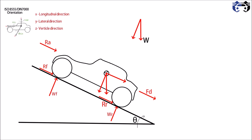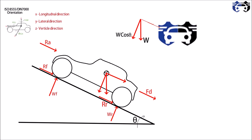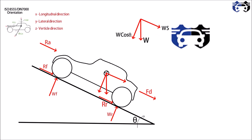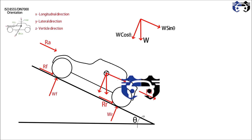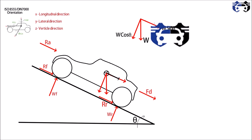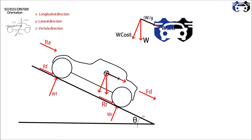The vertical force W, which is the weight of the car, has components W·cos(theta) and W·sin(theta). One more force acting is the D'Alembert force — basically the inertial force — which equals mass times acceleration. Mass is given by W/g, so this is W/g multiplied by acceleration.